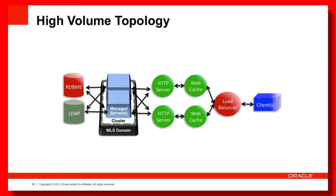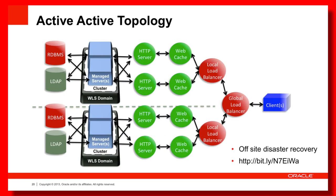With that topology in mind, we certainly have the ability to scale out with lots of managed servers, HTTP servers, web cache servers and so on. But the problem with this topology is if all these servers are located at one location and you have a disaster on site, there's nothing those servers can do for you if they lose power or get destroyed. Something that WebLogic Server and Fusion Middleware supports is the concept of active-active topologies, where you take the high volume topology and duplicate it across different remote physical sites — maybe one set of servers at your current HQ and another set a kilometer away.